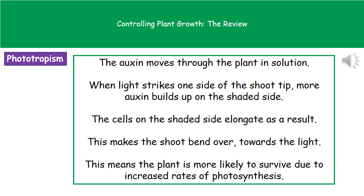Once that auxin has been made, it moves through the plant in solution. When light strikes one side of the shoot tip, the auxin builds up on the shaded side — the opposite side to where the light is hitting. As a result, the cells on the shaded side elongate. Because those cells get longer than the ones on the light side, the shoot bends towards the light, allowing the plant to angle its leaves towards the light and carry out photosynthesis at a much greater rate.